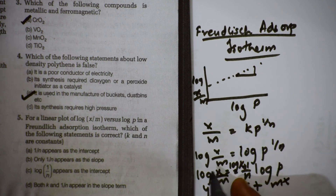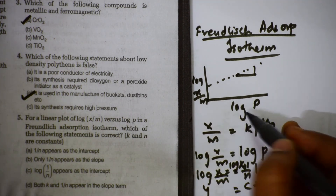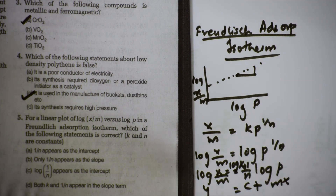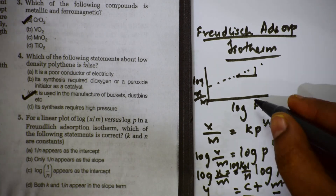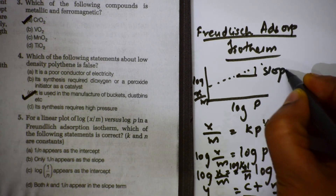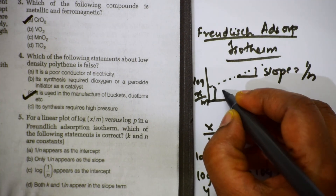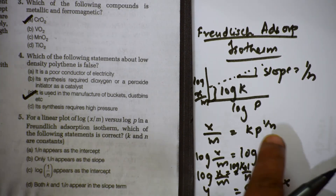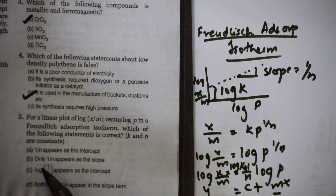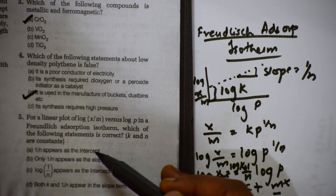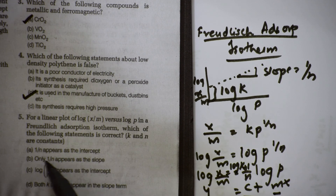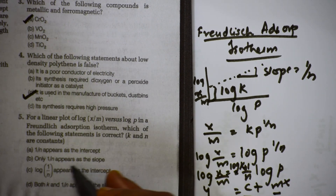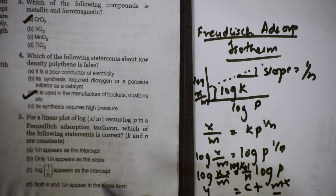So to summarize: log(x/m) is on the y-axis, log P is on the x-axis, 1/n is the slope, and log k is the intercept. Checking the options: '1/n appears as intercept' — wrong. 'Only 1/n appears as slope' — this is correct. 'log(1/n) appears as intercept' — wrong. 'Both k and 1/n appear in the slope term' — wrong. So the correct answer is option 2: only 1/n appears as the slope.